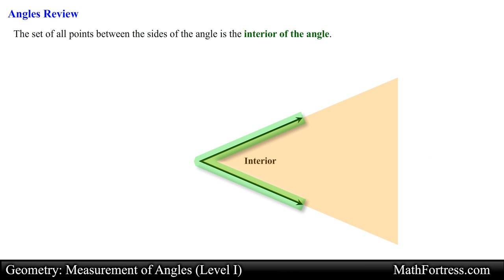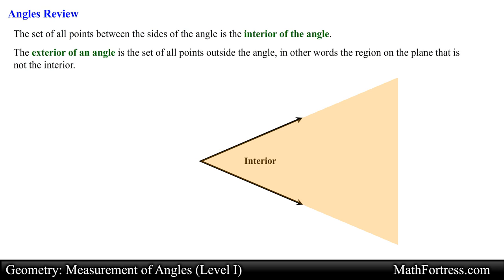The interior of an angle is the area between the two rays or line segments that define it. The sides of the angle form jaws that extend out to infinity. The exterior of an angle is the set of all points outside the angle, in other words the region on the plane that is not the interior.